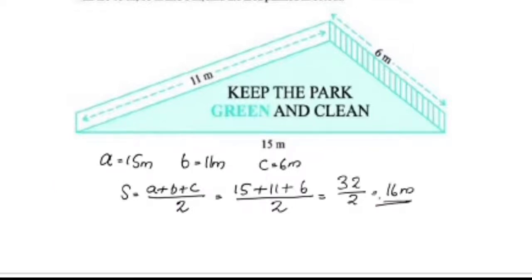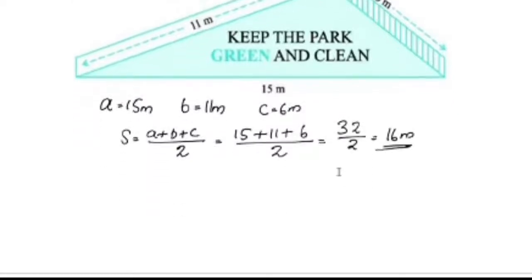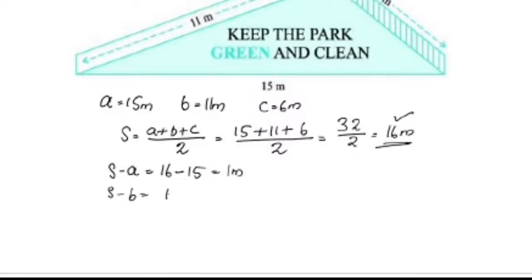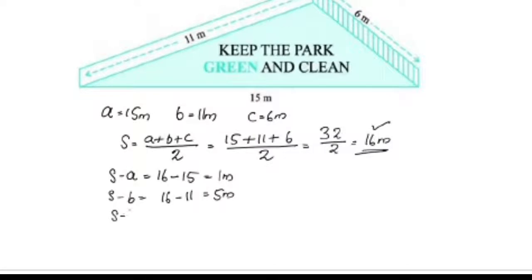Now let's calculate S-A, S-B, and S-C. S-A is 16 minus 15, which equals 1m. S-B is 16 minus 11, which equals 5m. S-C is 16 minus 6, which equals 10m.